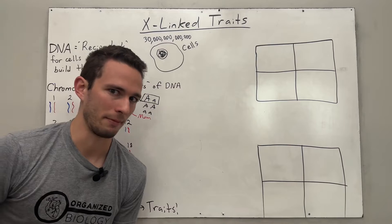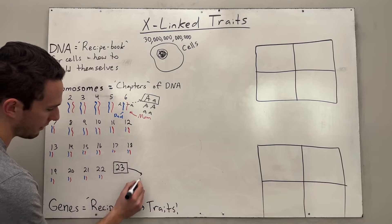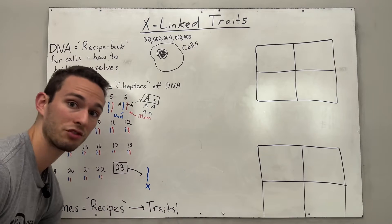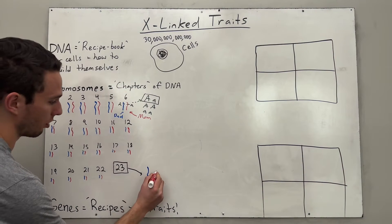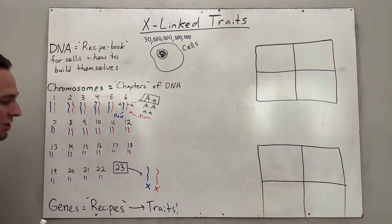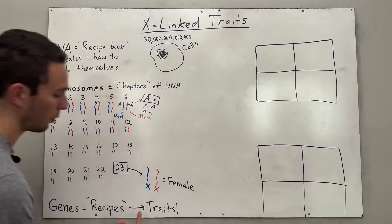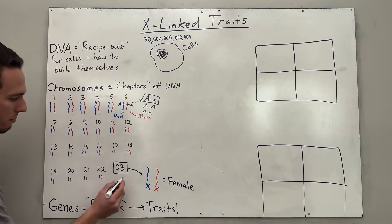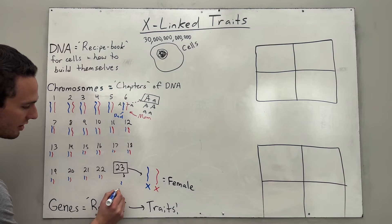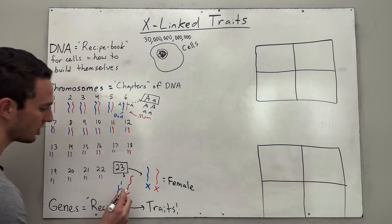Here's where X-linked traits come in. On that 23rd chromosome pair, you have two options. From dad, you can receive an X chromosome — large — or a very small Y chromosome. From mom, you always receive an X chromosome. If you get X from dad and X from mom, your genotype is XX — that is a genetic female. But if dad gives you a Y chromosome and mom gives you an X, you would be a genetic male.